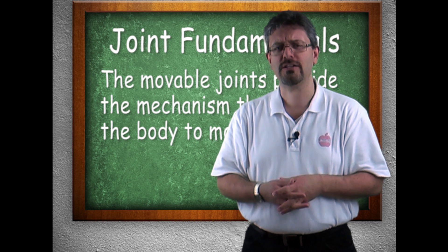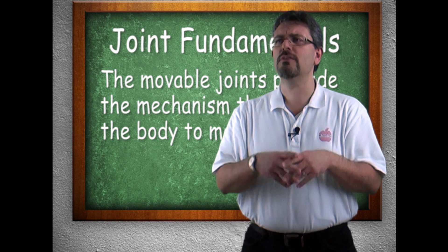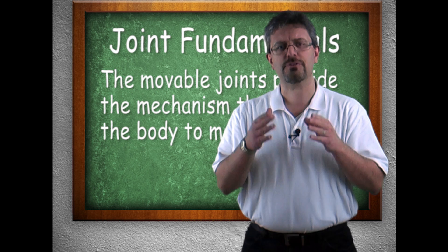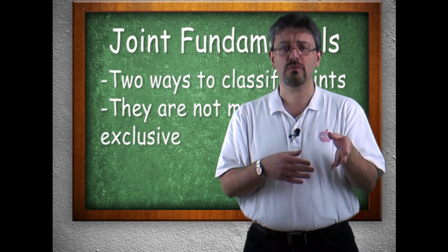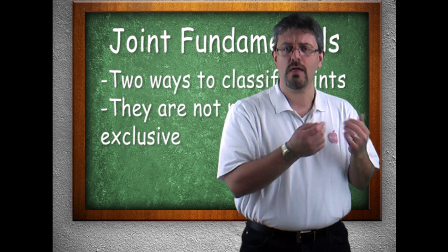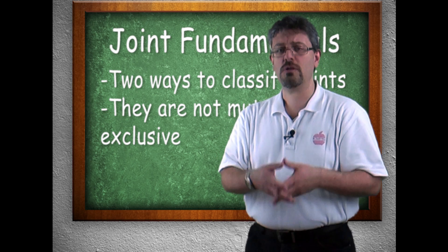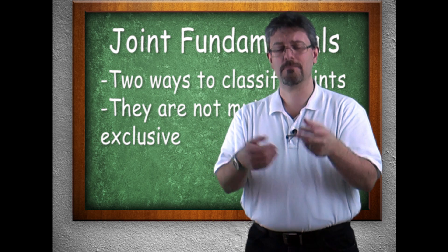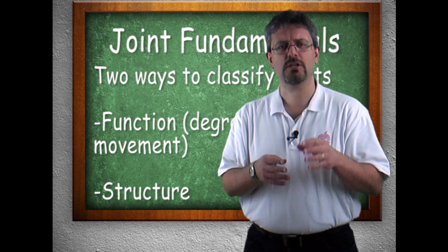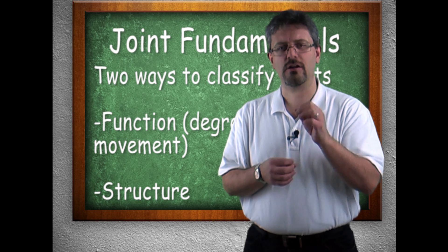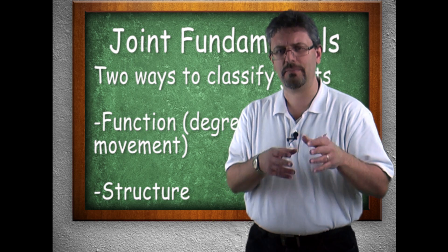We can classify joints by two different schemas, two different classifications. These are not mutually exclusive. What I mean by that is you can be a student, we can classify you by student, and we can classify you by gender. You can be parts of both groups. That's what we're talking about here. The joints can be classified by degree of movement, and they can also be classified by their structure. Let's take a quick look at the degree of movement, and then in our next video we'll take a look at structure a little bit more deeply.